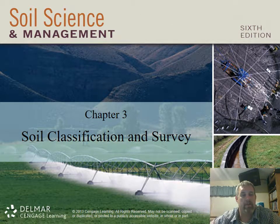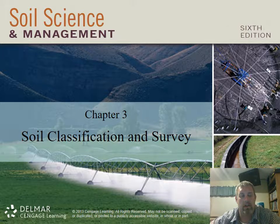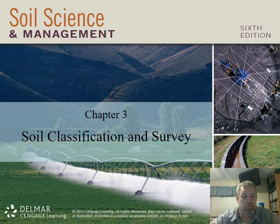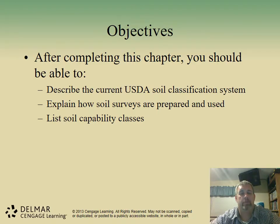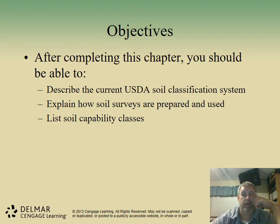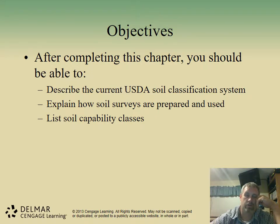Welcome to Chapter 3 of Soil Science and Management. Today we're going to discuss soil classification, surveying soil, and understanding the different parts of soil and how we classify different soils for suitability and based upon uses. The objective of this chapter is to understand and describe the USDA soil classification system, how soil surveys are used and prepared, and the land capability classes as defined by the soil conservation standards.